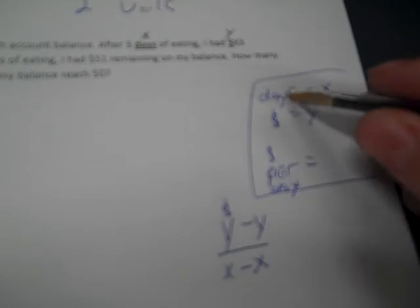So after three days of eating, I had $63 remaining on my balance, but it didn't say each day or per day, so it's not 63. And then 51 doesn't have each or per with it. So I need to figure out what this is. They don't just tell me it. So if I need to figure it out, I'm going to use my Y minus Y, X minus X formula. Now the Y is dollars, so I'm going to put a little dollar sign up there, and then the X is days.